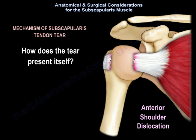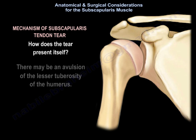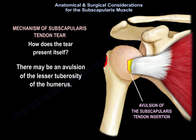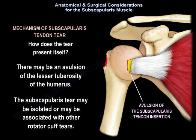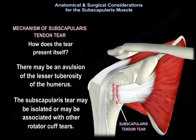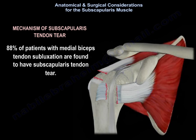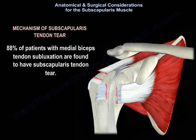How does the tear present itself? There may be an avulsion of the lesser tuberosity of the humerus. The subscapularis tendon tear may be isolated or associated with other rotator cuff tears. Notably, 88% of patients with medial bicep tendon subluxation are found to have a subscapularis tendon tear.